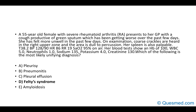Felty's syndrome is the triad of rheumatoid arthritis, neutropenia, and splenomegaly. Pleurisy is less likely as it wouldn't explain the splenomegaly. Pneumonitis is possible but would typically be related to methotrexate use, which isn't mentioned. Pleural effusion is possible given dullness to percussion, but doesn't explain the splenomegaly. Amyloidosis can cause splenomegaly but doesn't explain the blood tests, so Felty's syndrome is the correct answer.